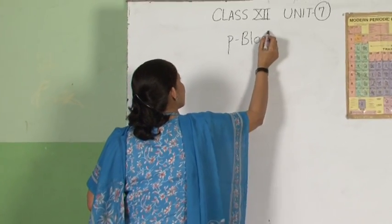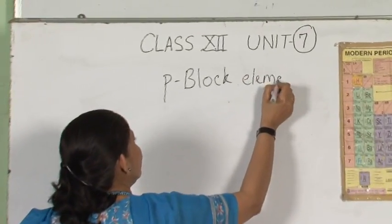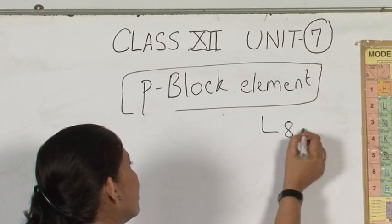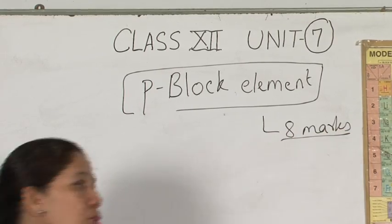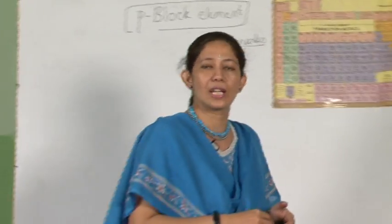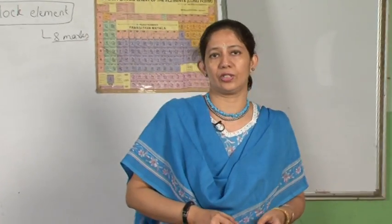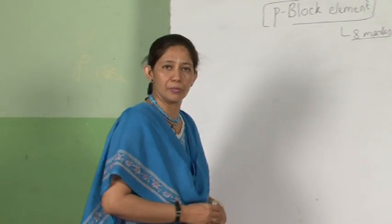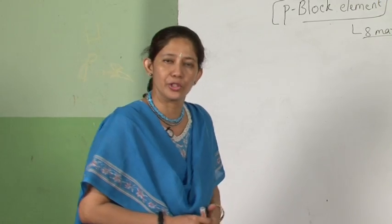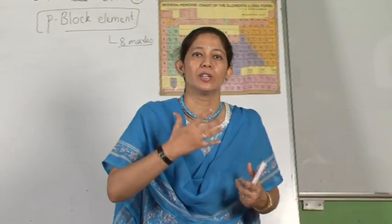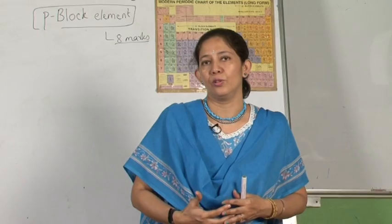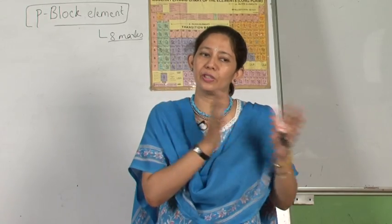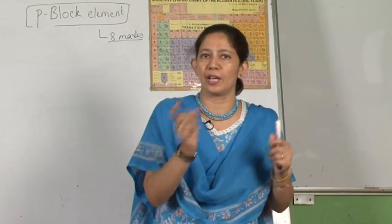It carries the maximum marks — 8 marks — in which you generally get reasoning type of questions, chemical reactions, and structures. The structures have already been dealt with in the previous class by Mr. M.P. Gupta. I am going to tell you about the reasoning type of questions. For chemical reactions, you can note them down in one notebook and try to memorize them. You may get 2 or 3 reactions, but you must know the completion of each reaction and even the stoichiometry.